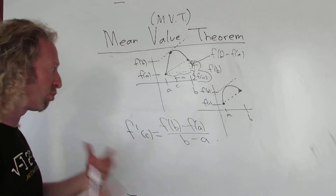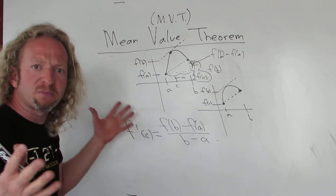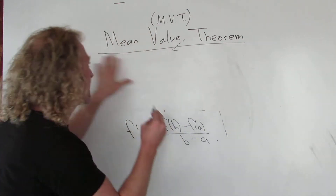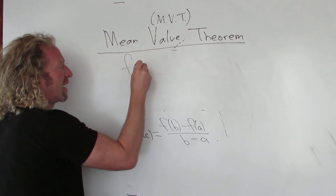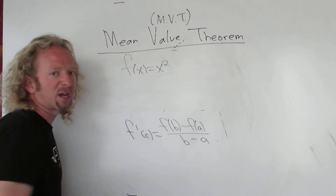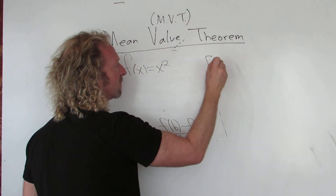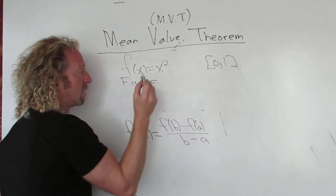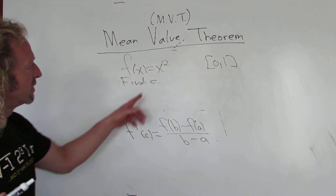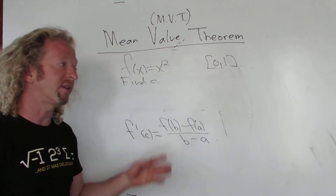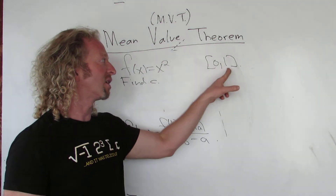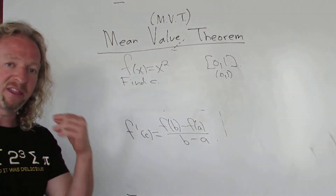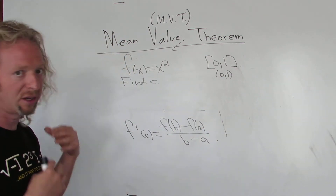Let's go ahead and do an actual problem where we find C. I'll make one up. F of x is x squared on the interval [0, 1], and let's find C. Because this is a polynomial, it's continuous and differentiable everywhere — in particular, it's continuous on this closed interval and differentiable on this open interval. Therefore it satisfies all the criteria of the mean value theorem.